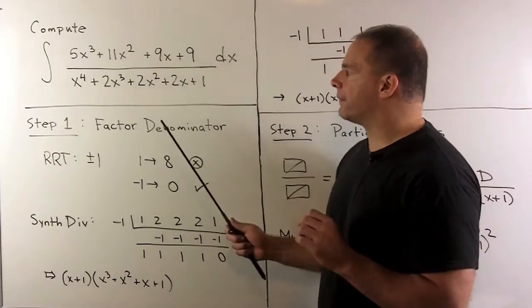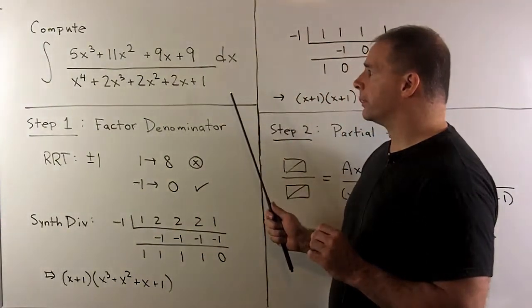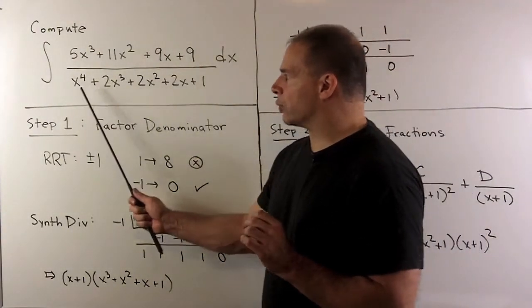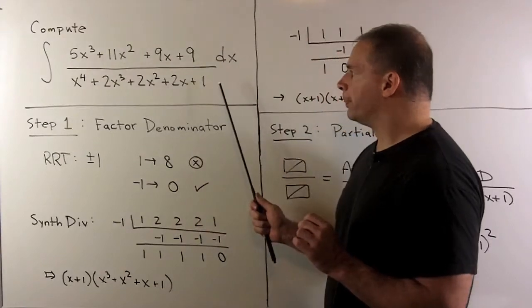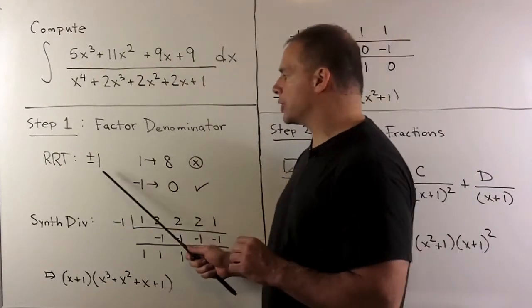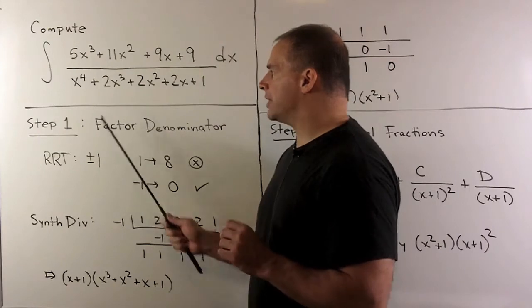Our first step is to factor the denominator. We apply the rational roots test to this polynomial. Only possible rational roots will be plus or minus 1, so we test them.